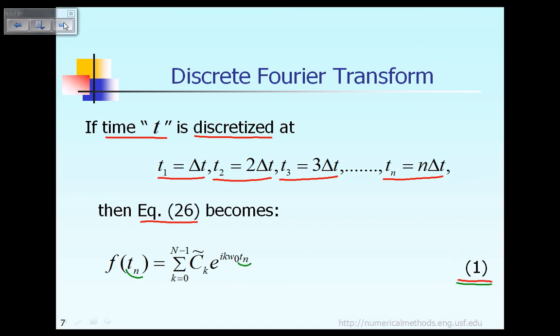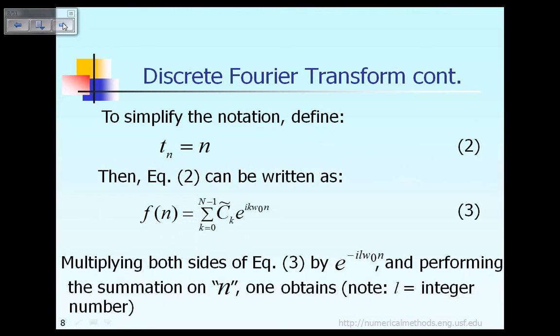The next thing we say is this: To simplify the notation further, instead of saying the time t sub n, we just simply say t sub n is equal to n. That's what equation 2 says. So this is just like a convenient notation. Now please do not confuse.